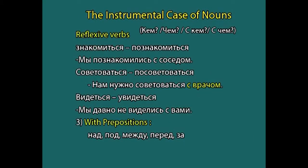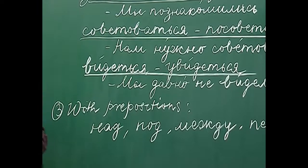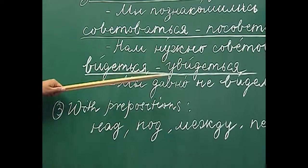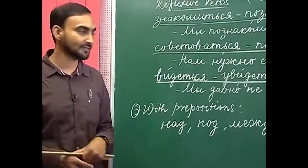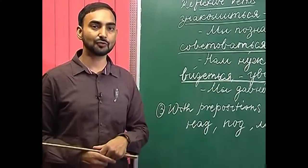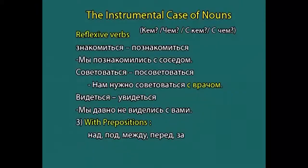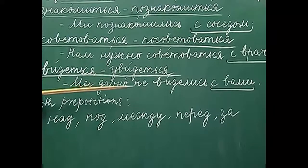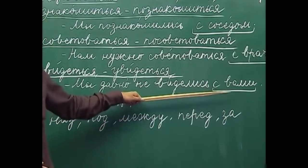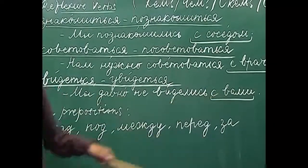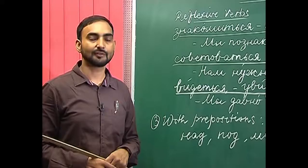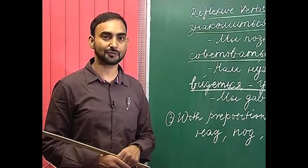The next pair is 'videt'sya / uvidet'sya' — to see each other. The non-reflexive counterpart 'uvidet'' takes the accusative case, but the reflexive verb takes the instrumental case with preposition 's'. For example: 'my davno ne vidalis' s vami' — it has been long since we have met you. Here the instrumental case of the pronoun is used with the preposition 's'. These were the reflexive verbs with which we use the instrumental case of nouns with the preposition 's'.